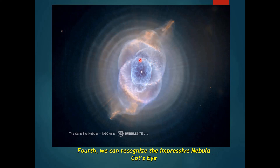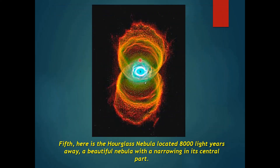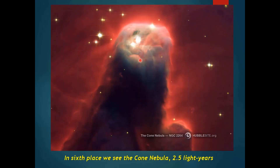Here we see the Cat's Eye Nebula. Next we go to the Hourglass Nebula, which is around 8,000 light years away. And this is something which is very near — around 2.5 light years — this is the Cone Nebula.